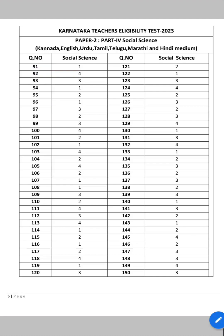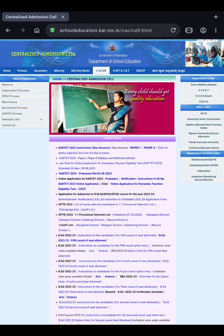Now you can check your answers with the key answers and calculate the scores you obtained in KTET 2023. If you have any objections over the key answers released on the website, you can apply for objections online. I hope you find this video helpful — if so, do like and share the video with your friends and family. Please subscribe to my channel and don't forget to press the bell icon to get notified about upcoming videos. Thank you for watching — stay connected, keep learning.